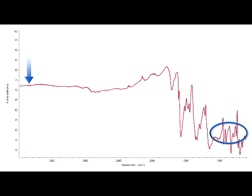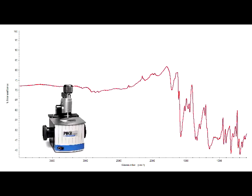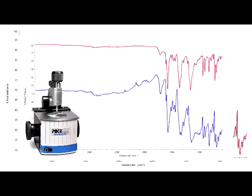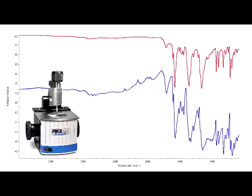One option to satisfy the critical angle would be to take advantage of the Gladiator's interchangeable plates and switch to a Germanium ATR crystal. Then the critical angle is satisfied.